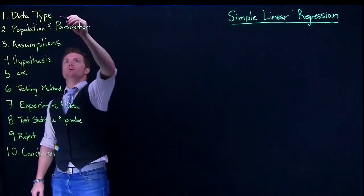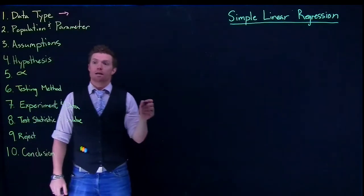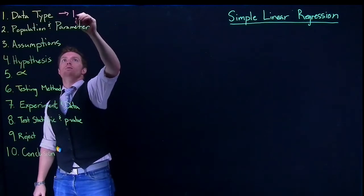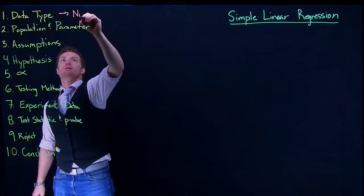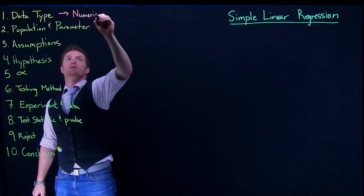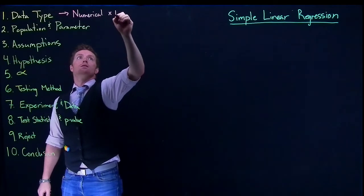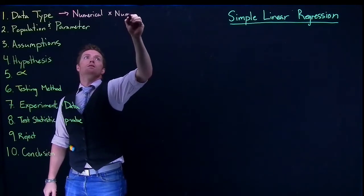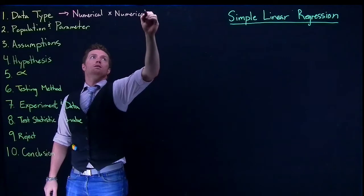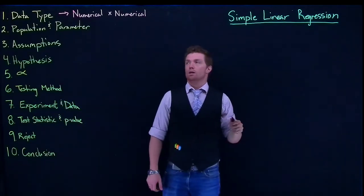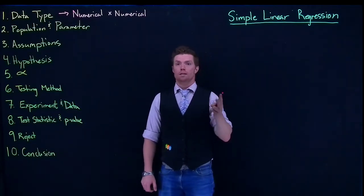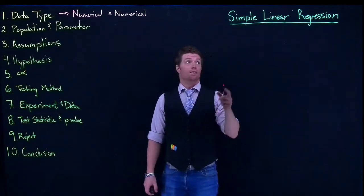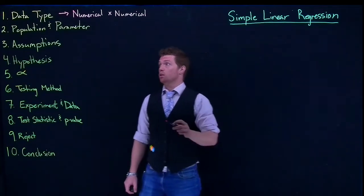So the first thing that we're looking at is data type. The data type that we are using is going to be numerical by numerical. The variables that we are measuring on our subjects are two pieces of numerical data, and that's how we are using it in our linear regression.